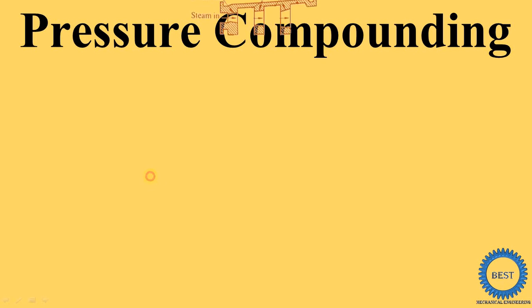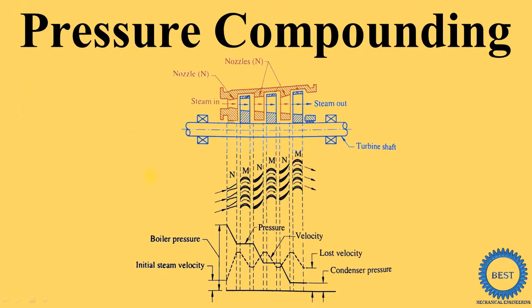In this video I explain pressure compounding. In the last video I already explained what compounding is and why compounding is required. Compounding is generally used to reduce the speed of the turbine. In an impulse turbine with only one rotor, the turbine speed is 30,000 RPM, but the generator runs at 3,000 or 3,600 RPM. To reduce the speed, we use various types of compounding: pressure, velocity, and pressure-velocity compounding.